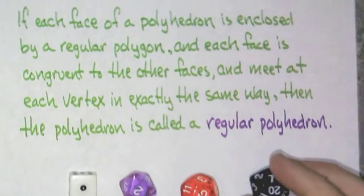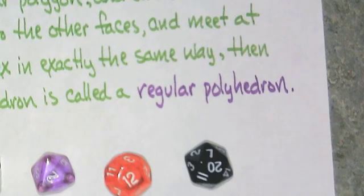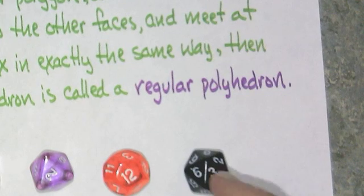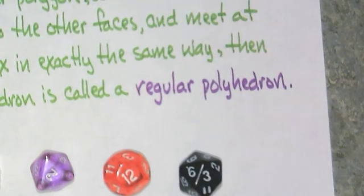And then I have another one that has 20 faces. Let's see if I can zoom in a little bit here. This one, every face is, again, an equilateral triangle, and they meet in the same way.